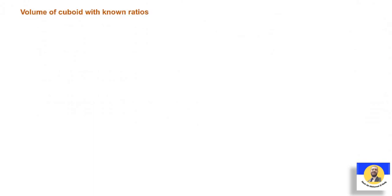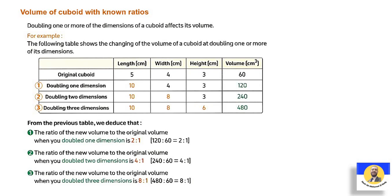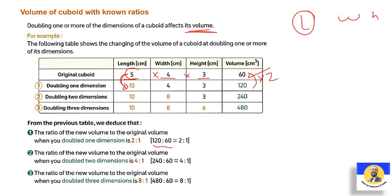Volume of Cuboid with Known Ratios. We have ratios, and we can use them to find the volume. Doubling one or more dimensions of a cuboid affects its volume. For example, if original dimensions are length=5, width=4, height=3, then original volume = 5×4×3 = 60. If we double the length, 5 becomes 10, so the volume is also multiplied by 2: 60 becomes 120. The ratio is 2 to 1.